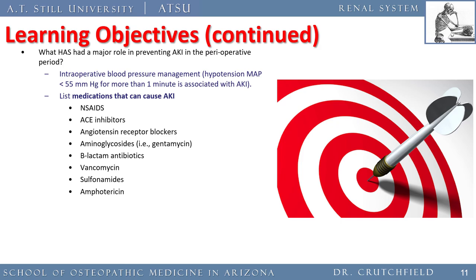What has had a major role in preventing acute kidney injury perioperatively? Intraoperative blood pressure management — keeping mean arterial pressure greater than 55 mmHg is the best thing you can do. Medications that can actually cause acute kidney injury include NSAIDs (Motrin, Naproxen, Toradol), ACE inhibitors, angiotensin receptor blockers, aminoglycoside antibiotics such as gentamicin (famous for causing deafness and kidney damage if levels are unregulated), beta-lactam antibiotics, vancomycin, amphotericin, and sulfonamides like Bactrim.